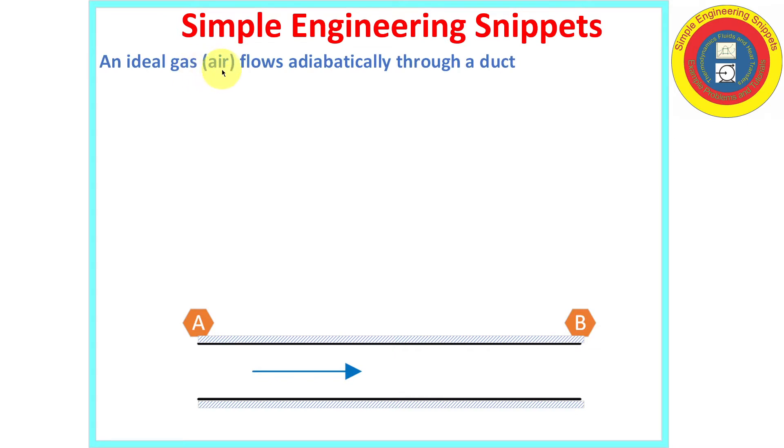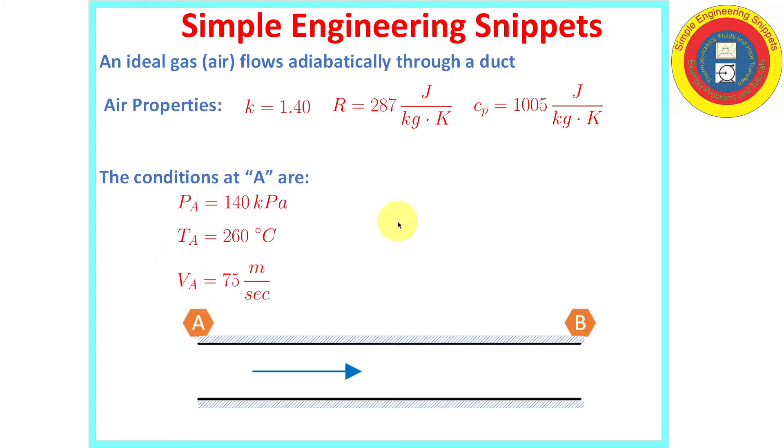Okay, again we have air flowing through this insulated duct and air properties are provided. We are going to be treating the air as an ideal gas. We have inlet conditions which we're labeling A. We have the pressure, the temperature, and the velocity. At B, the outlet, we know the pressure, the temperature, and one of the things that we're going to be looking for is the velocity at B.